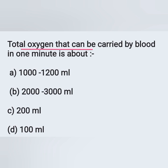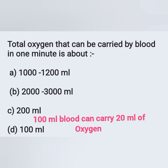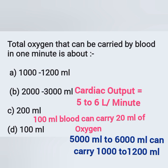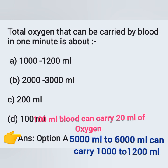Next question: total oxygen that can be carried by blood in one minute is about? Options: A) 1200 ml, B) 2000–3000 ml, C) 200 ml, D) 100 ml. Normal cardiac output is 5 to 6 liters per minute. 100 ml of blood carries 20 ml of oxygen, so 5000–6000 ml of blood carries 1000–1200 ml of oxygen. The correct answer is option A, 1000 to 1200 ml.